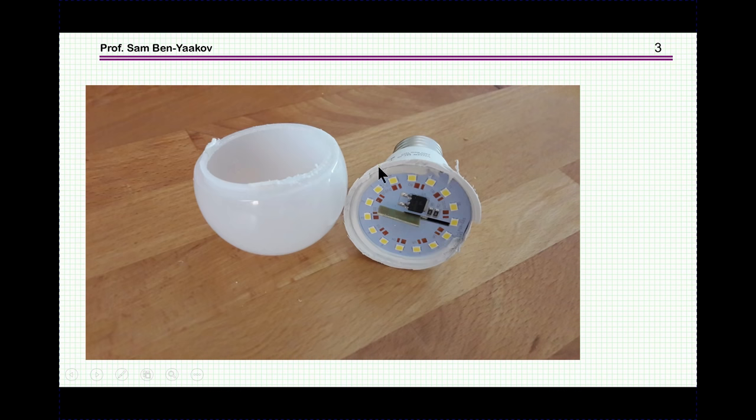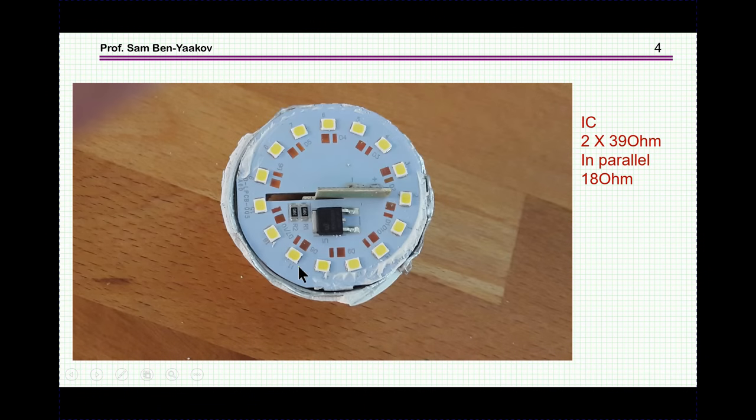Now when I'm opening this lamp, there is a cover here, an opaque cover, and this is the base plate with the LEDs around it. Let's have a look here closer. There are 15 LEDs at the circumference. Then there is an IC here and these are two resistors, each one of 39 ohms, so we have actually two in parallel which is 18 ohms. So this is the part which is actually illuminating.